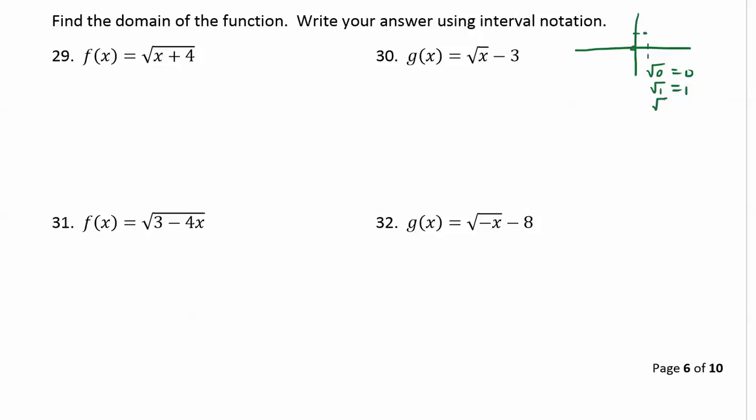If we plug in 4, that's a perfect square, we get 2, so it increases up to the right forever. What happens if I plug in negative 1? Well the square root of negative 1 is undefined.